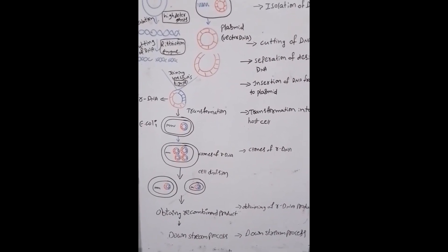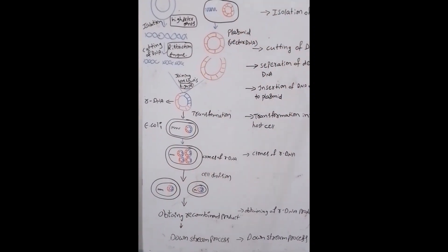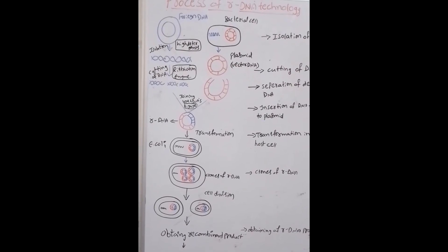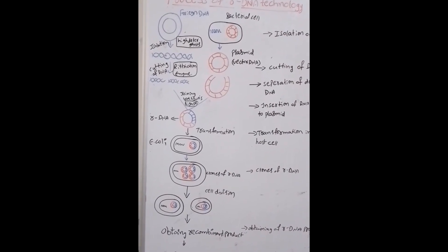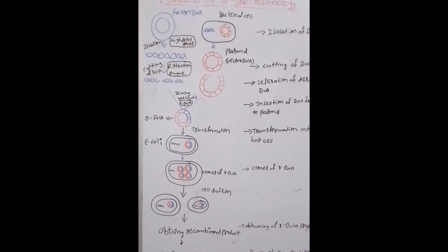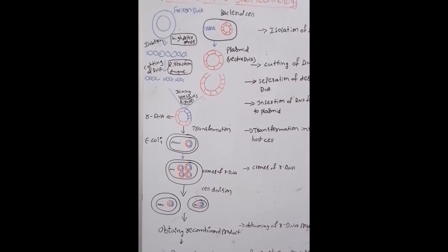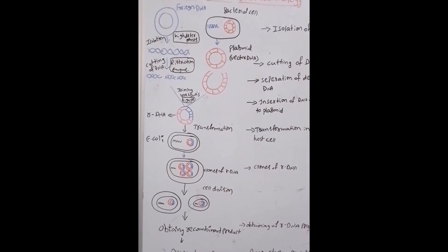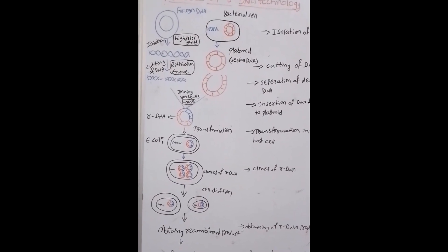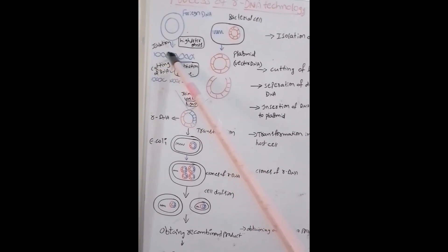Here, we first select foreign DNA and a bacterial cell. The first step is isolation of DNA. In this step, we use high detergent powders to open the cell wall and release DNA along with proteins and lipids.